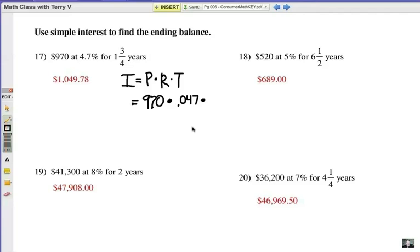Number 17. The final answer is $1,049.78. That's rounded to the nearest penny. So here's how we got that. Use the formula P times R times T, 970 times .047, don't forget the zero, times 1 and 3 fourths years. So let's convert that into a decimal. 1 and 3 fourths is 1.75. Now that will give us our interest answer. And then, of course, we have to add that on to 970. Total of that answer you can see there.